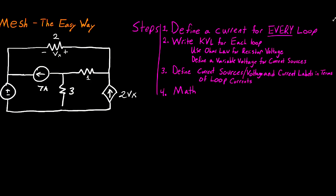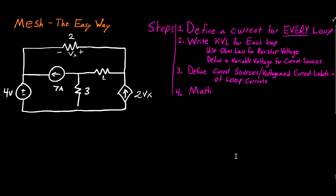To follow this approach, the first step is to define a current for every loop. Second, you have to write the KVL for each loop using Ohm's Law for resistor voltage drop. For current sources, you define a variable voltage across them so you can complete your KVL. Next, you define the current sources' voltage and current labels in terms of your loop currents. The last step is just math — by the time you've completed steps 1 through 3, you'll have a solvable system of equations.